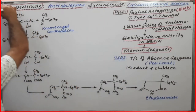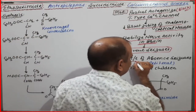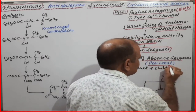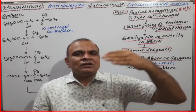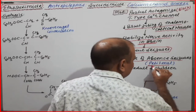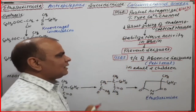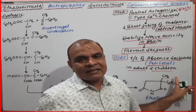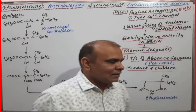The usage of ethosuximide is one specific indication: the treatment of absence seizures, also known as petit mal seizures. There are different types of seizures present in epilepsy, occurring in adults as well as children. Ethosuximide is equally tolerated by adults as well as children.